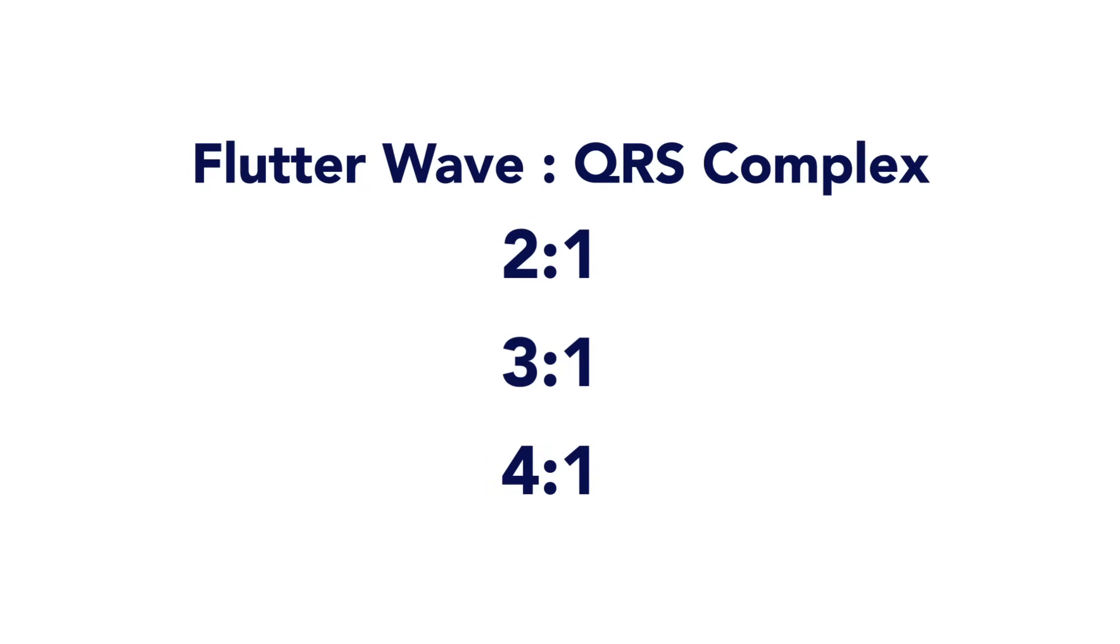Typically you'll see anywhere from a 2-to-1, 3-to-1, or 4-to-1 fixed block, which describes the pattern of flutter waves to QRS complexes.